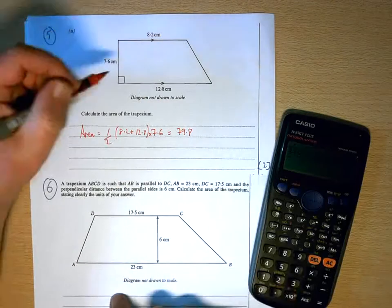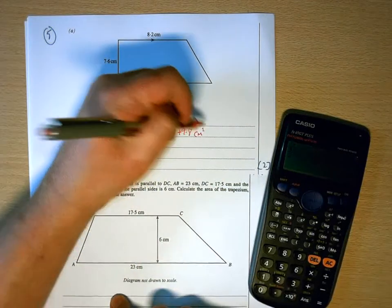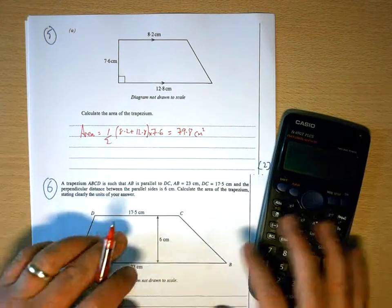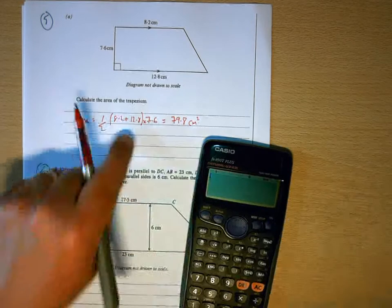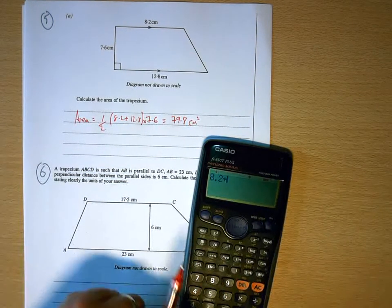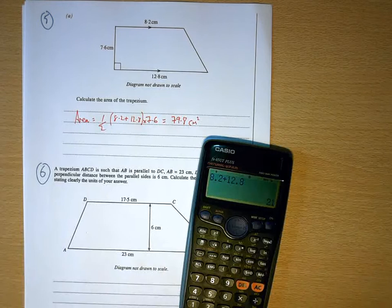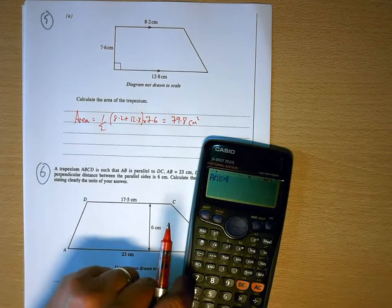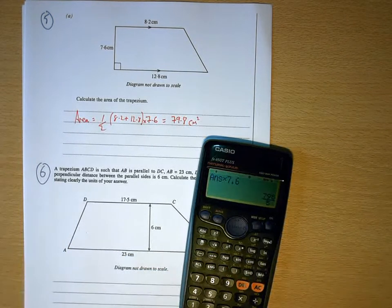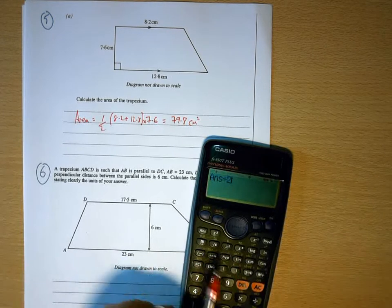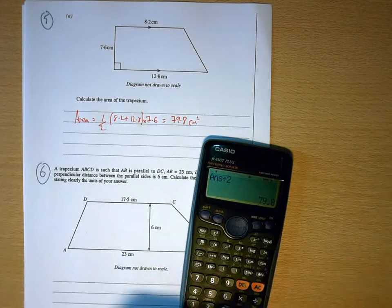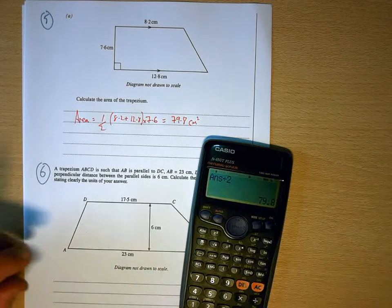79.8, and the units will be centimetres squared. You could do it in more than one stage, if you don't want to do it that way. Always do the adding first. So we're going to do 8.2 plus 12.8 equals 21, times 7.6, which is 159.6, and then divide by 2 to half it, and there's your answer, 79.8.